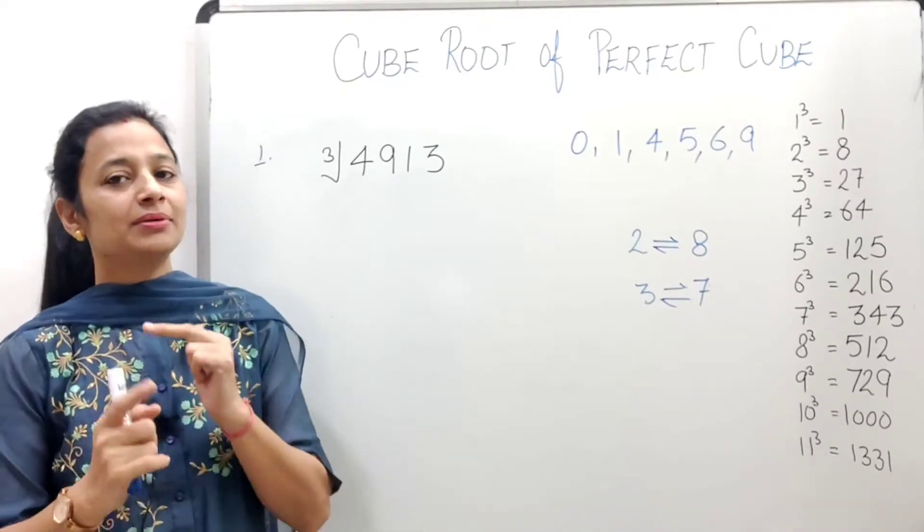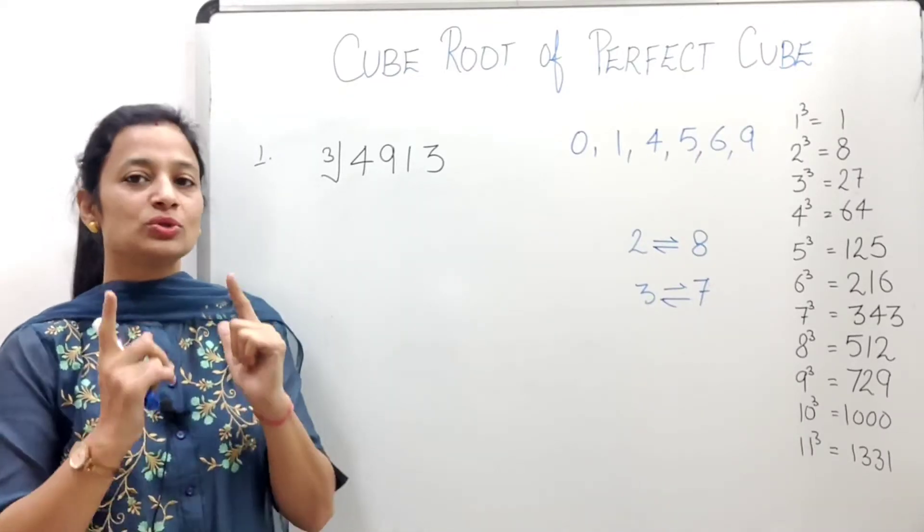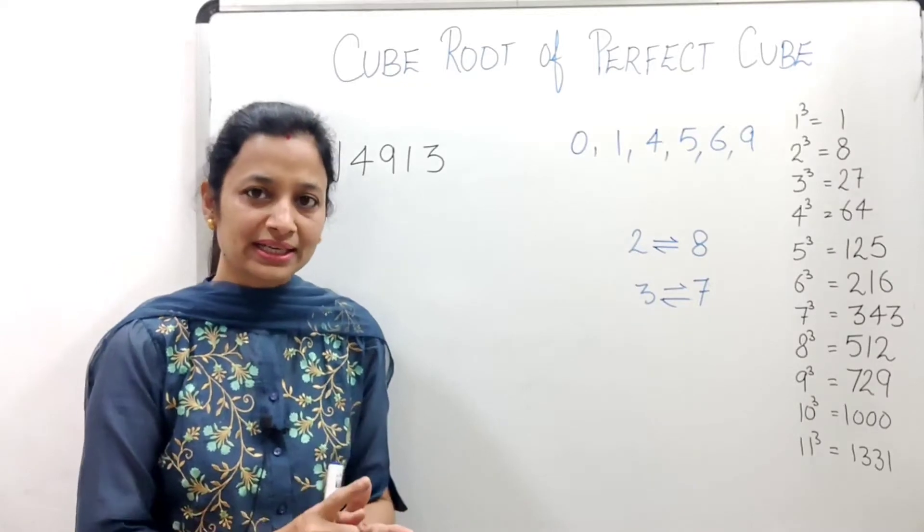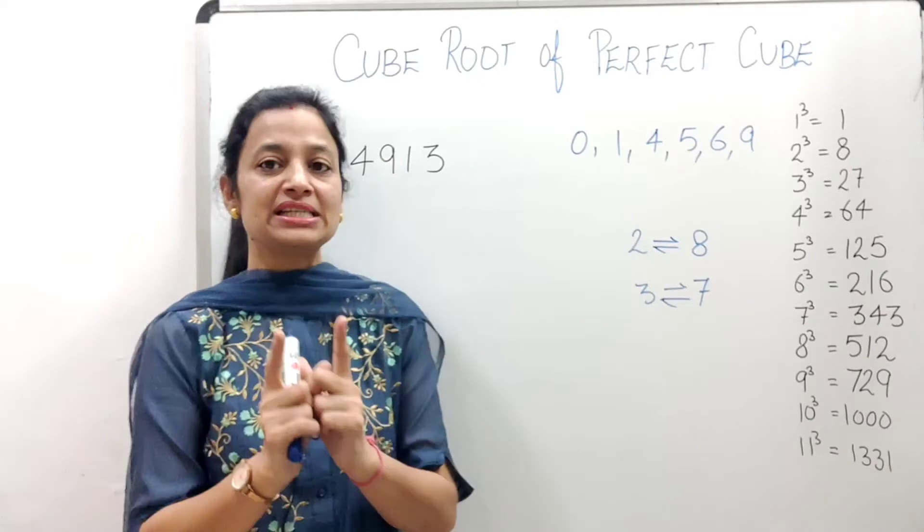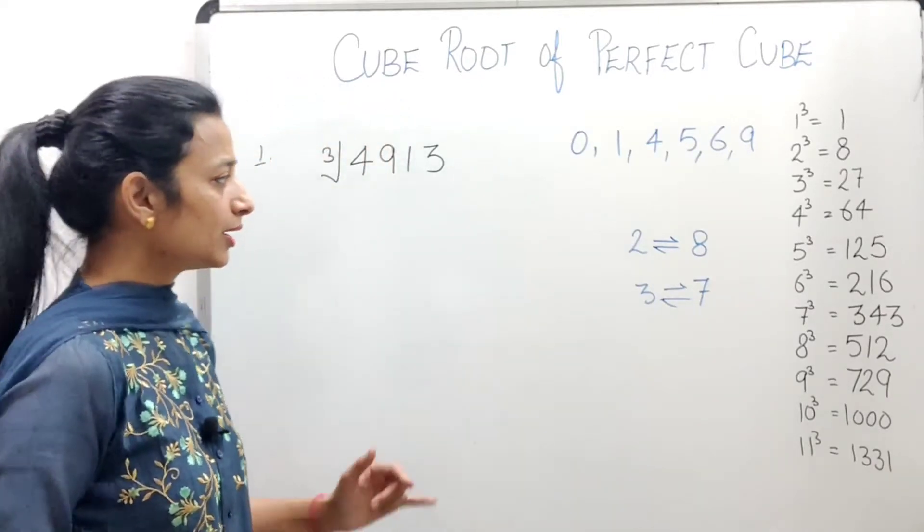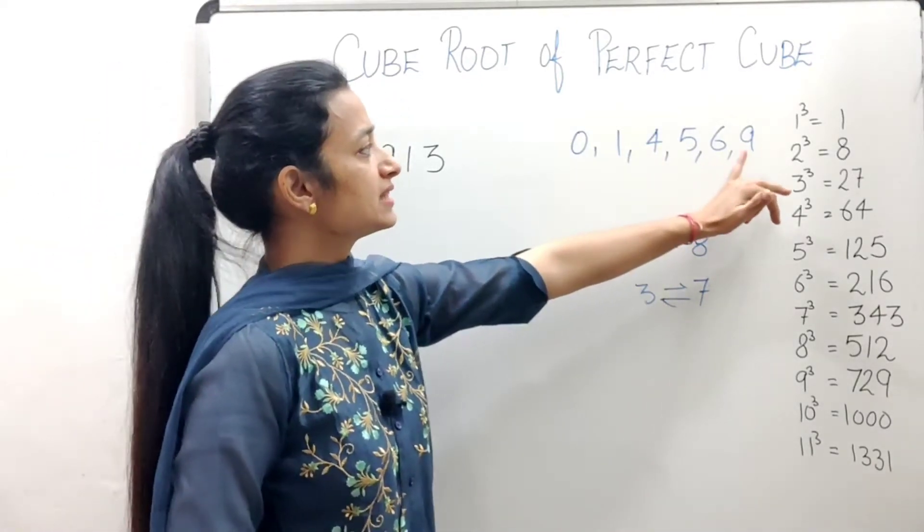So let's start the trick, but before starting, there are some points we need to understand. Number 1: we have to learn cubes from 1 to 9. And second thing is, when we find the cube, the unit place has the same number for certain digits. Those numbers are 1, 4, 5, 6, 9.